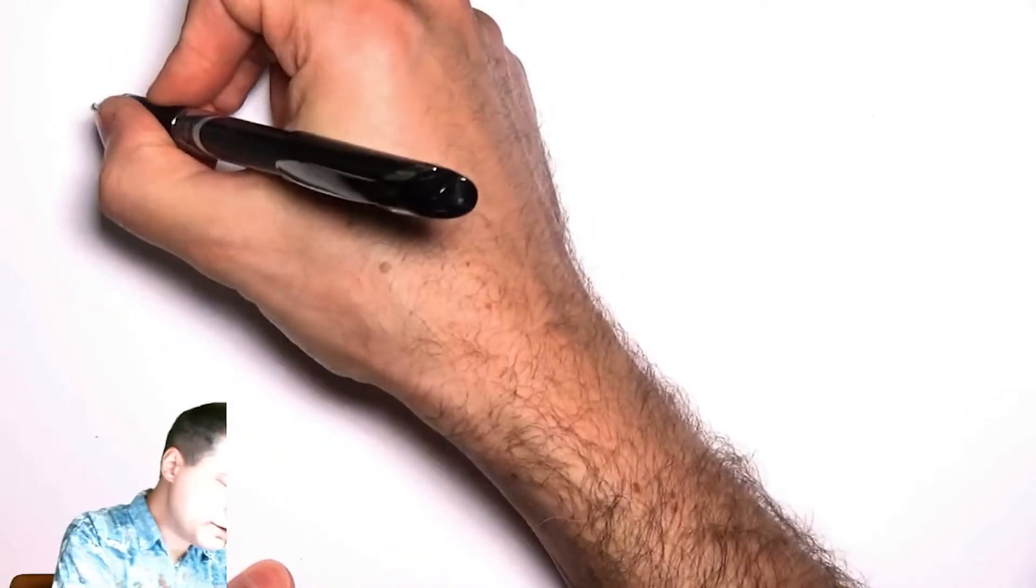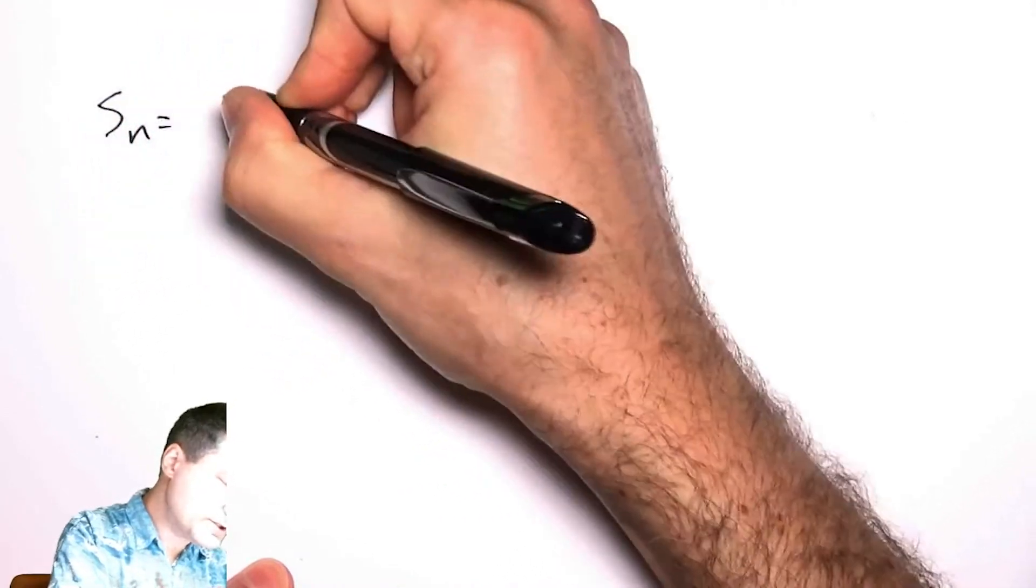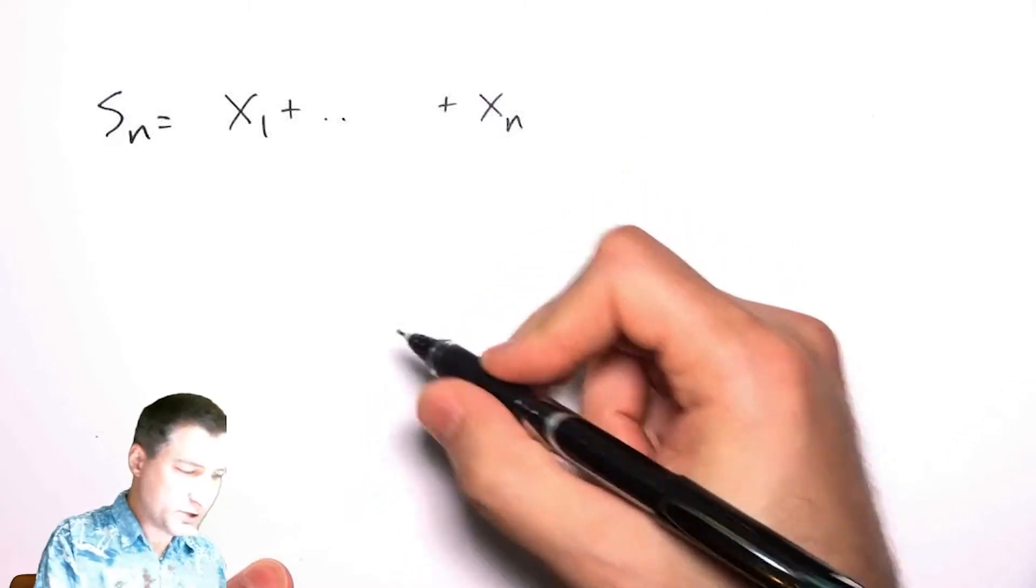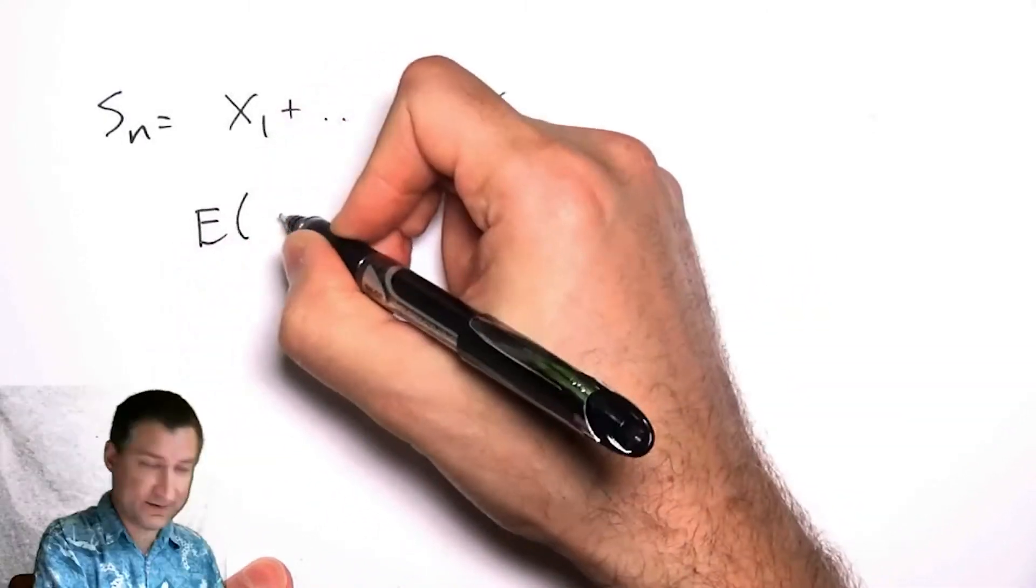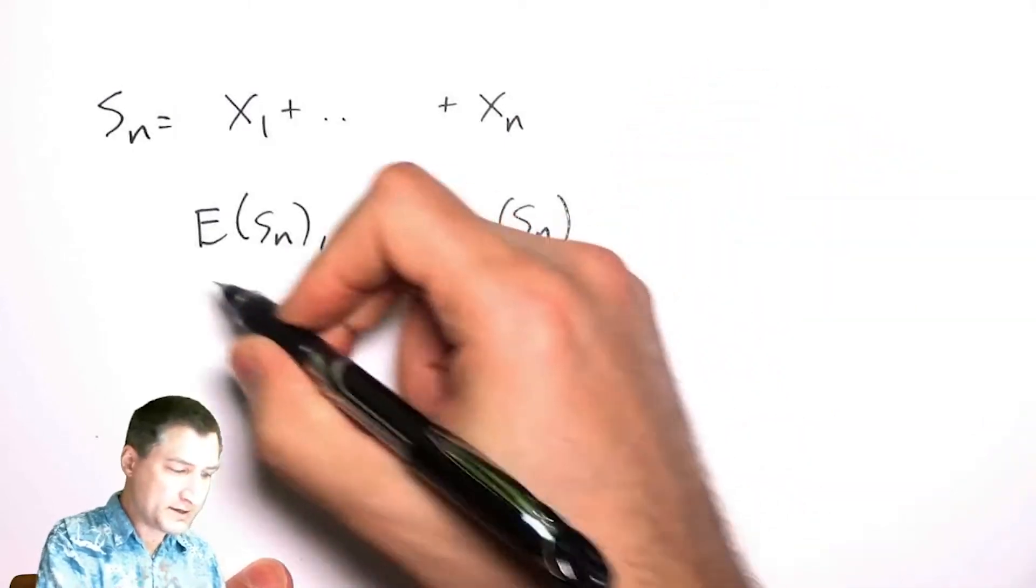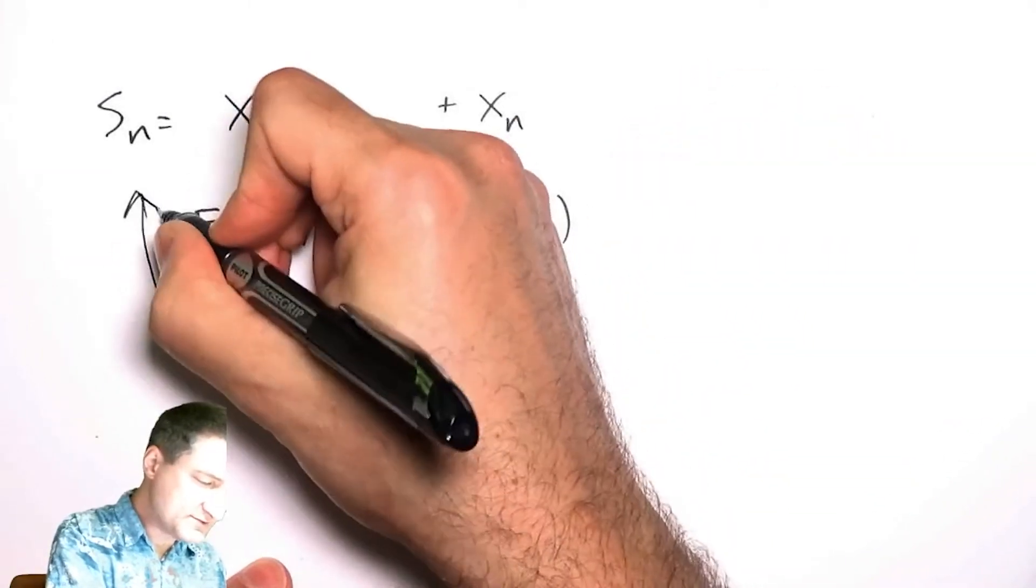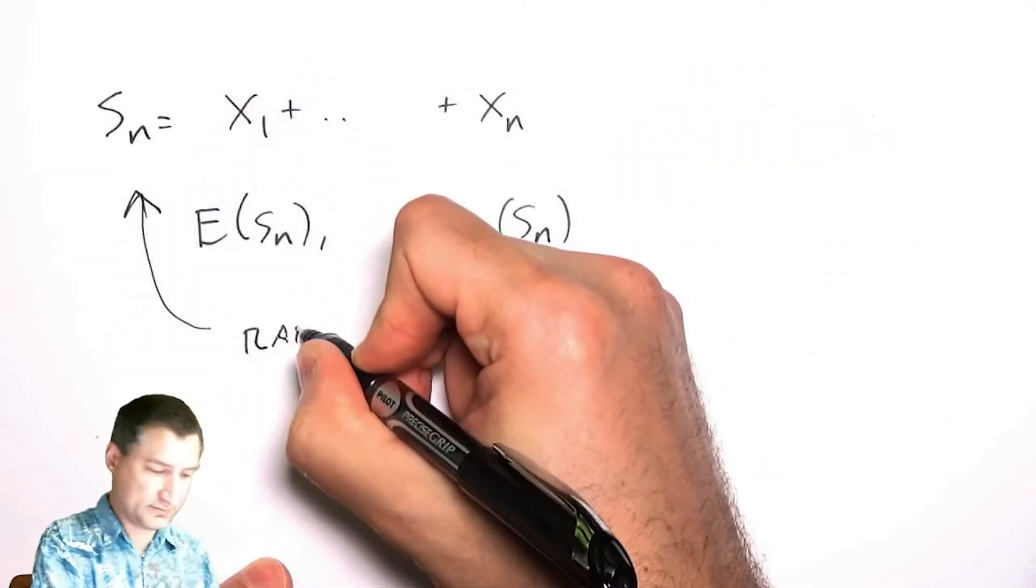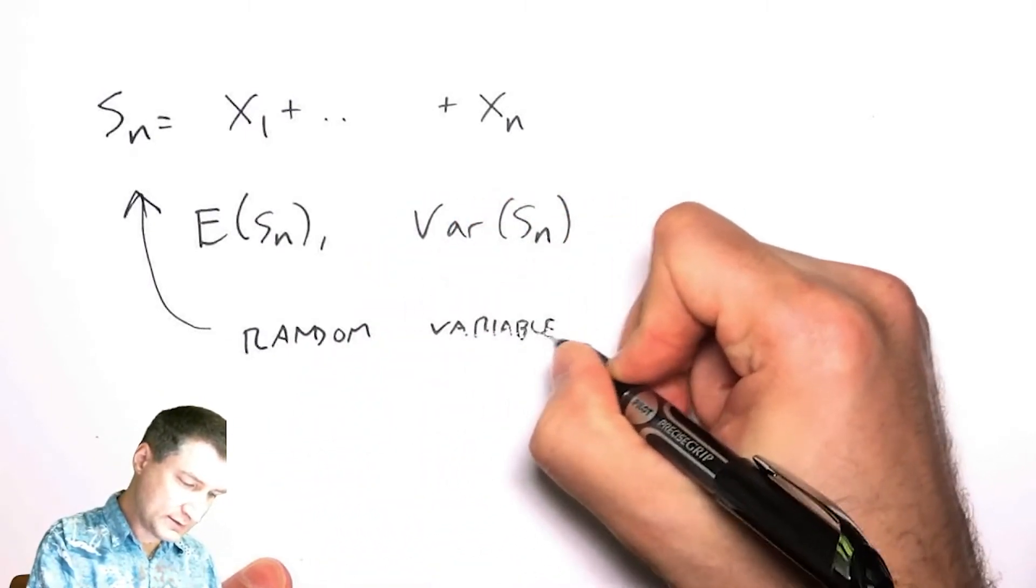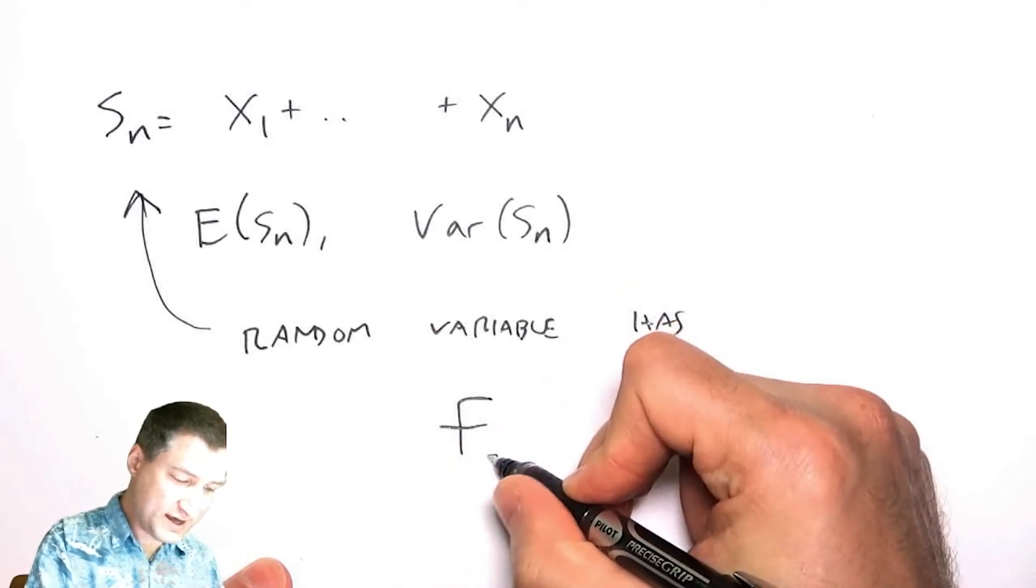So in previous lectures we talked about the sum of a bunch of random variables. We derived what is the expected value of this sum, what is the variance of this sum. But Sn itself is itself a random variable and as such it has some underlying PDF.